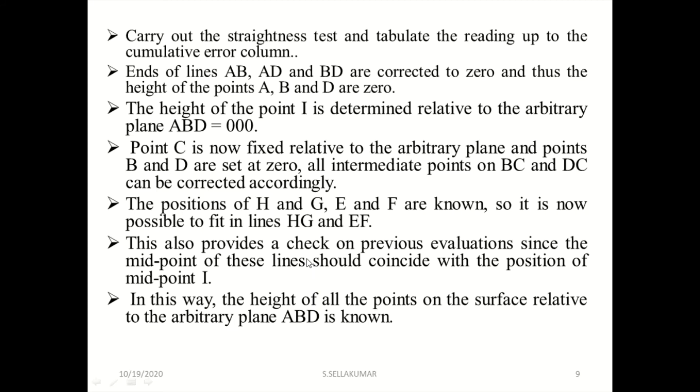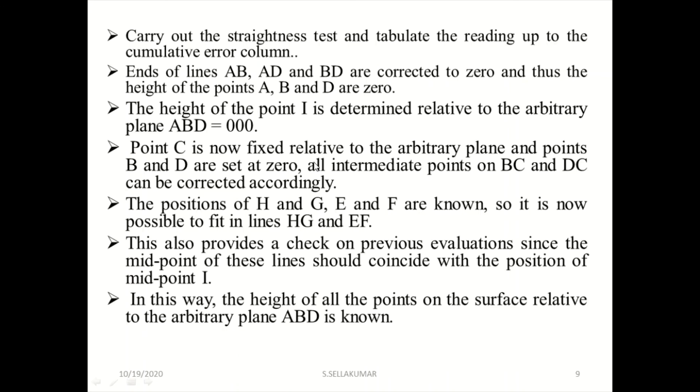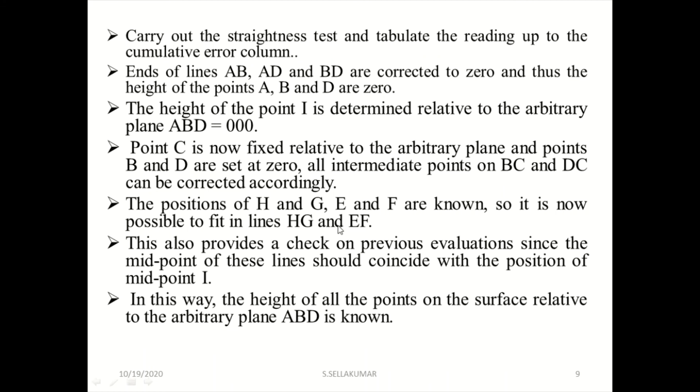The height of point i is determined applied to the plane bd equal to zero. Point c is fixed with the relevant occupative plane. Now points bd is zero, and then intermediate points bc and dc are calculated accordingly. First, you want to show bd is zero, and the remaining thing is that bd is zero.